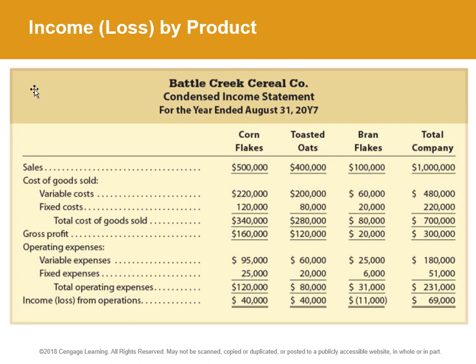Here is income or loss by product. We've got Battle Creek Cereal Company — think Kellogg's — and this is a condensed income statement. They have Corn Flakes, Toasted Oats, and Brand Flakes, plus the total company. Your eye immediately goes to the bottom where you see that Brand Flakes are losing $11,000. That's a net loss from operations, while everybody else is doing okay. So a manager's natural question would be: why don't we just get rid of Brand Flakes?